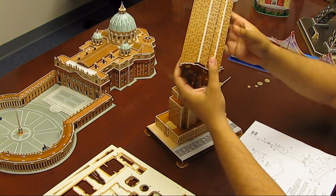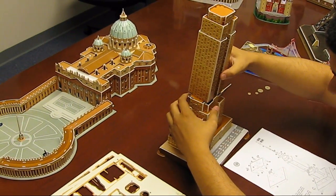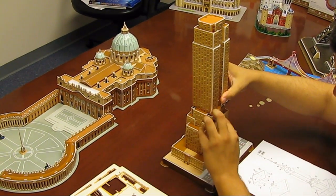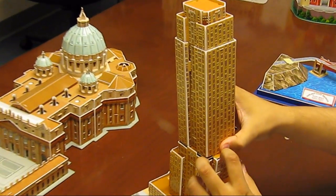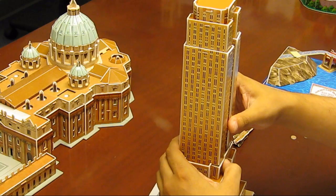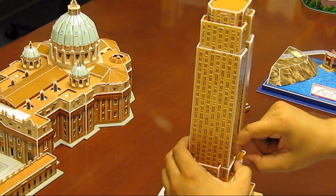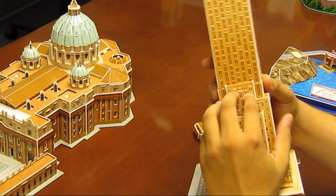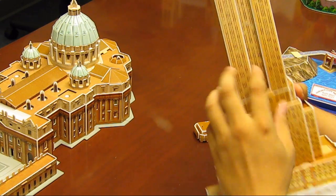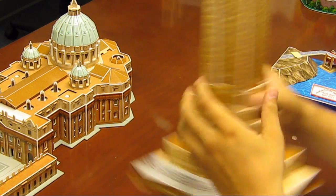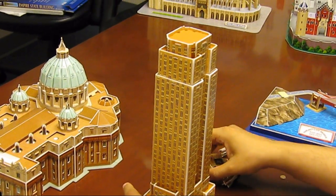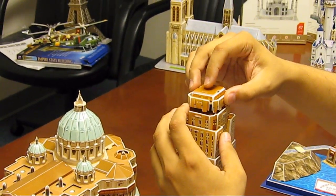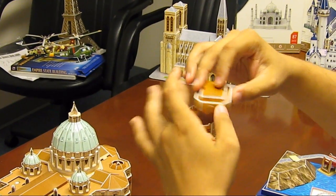You want to take the top part. Do the same. You still want to make sure that these pieces fit into one another. Secure it. Now you have that part. The third part just goes on top.